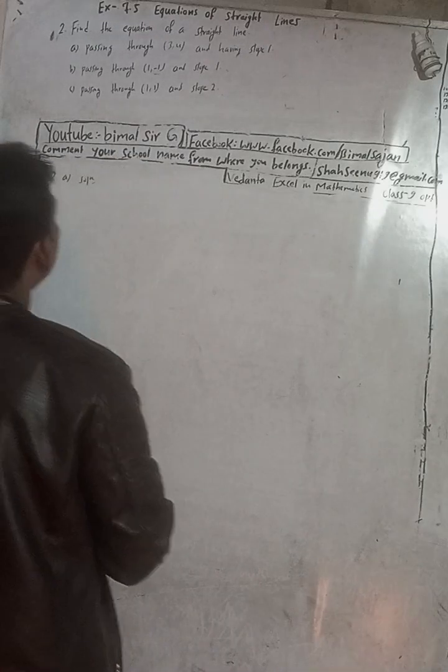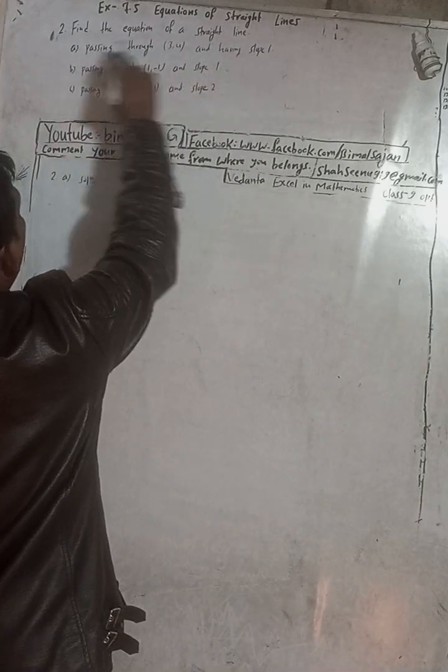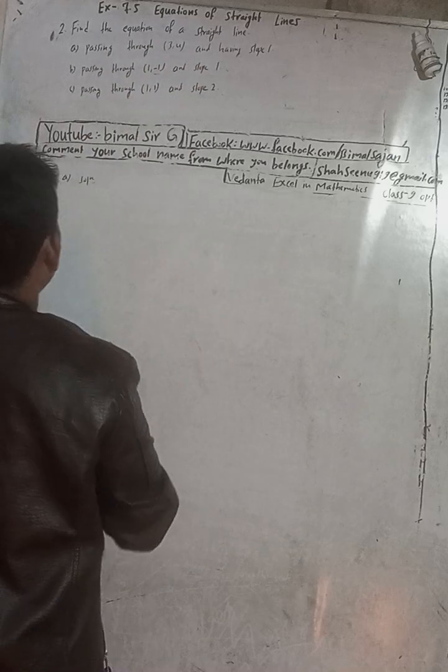Hi class 9 and 10 students, welcome back to Bhimalsarji YouTube channel. In this cold chilly season, I am here to warm up your days and nights with exciting content. Here the question is number 2, Exercise 7.5, equations of a straight line from Vedant Excel in Mathematics class 9. The question is: find the equation of a straight line passing through (3, 4) and having slope 1.